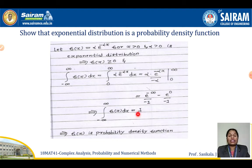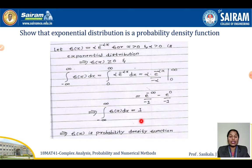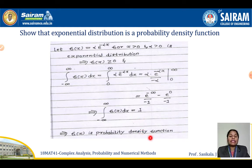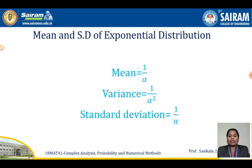Since e to the power minus infinity equals 0, the first term is 0. Then minus e to the power 0 equals minus 1, and minus times minus gives positive 1. So the integral equals 1, both conditions are satisfied, and f(x) is confirmed to be a probability density function.